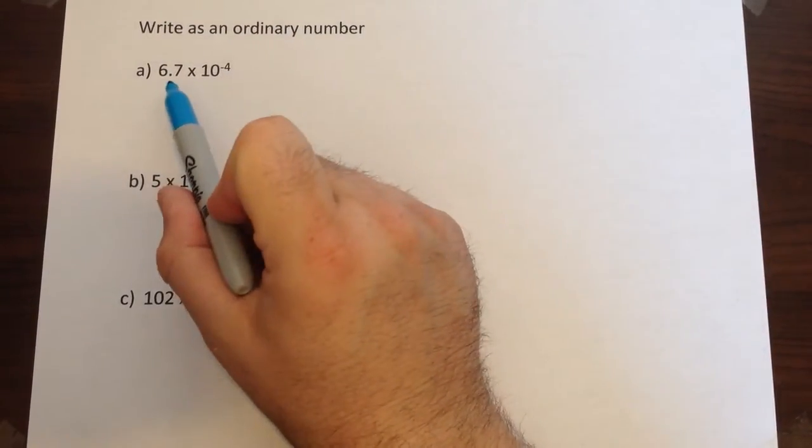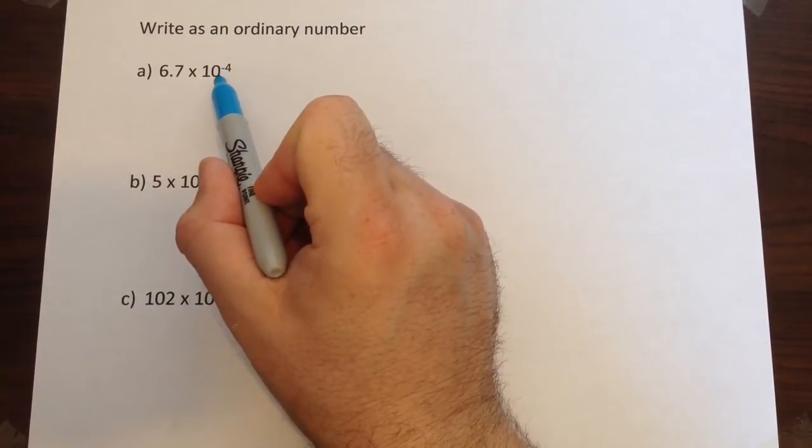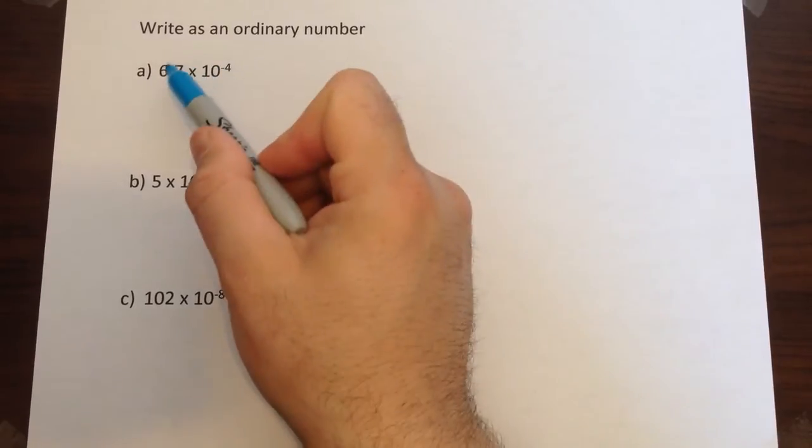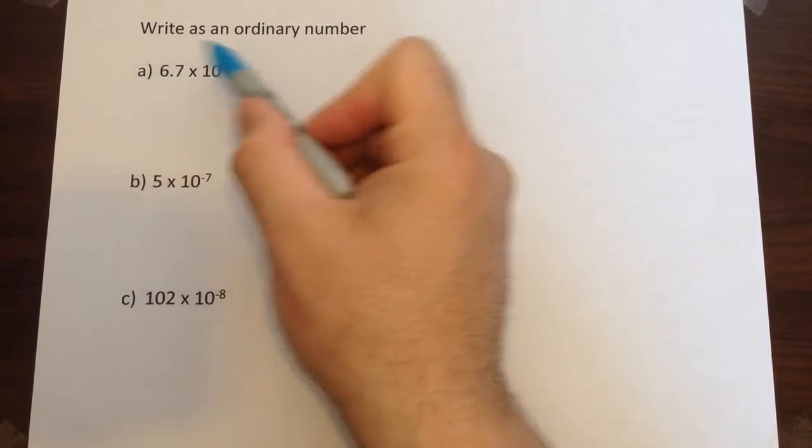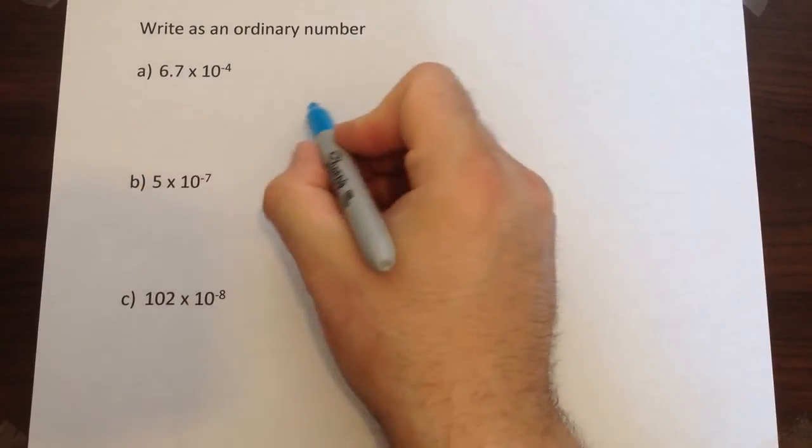This time we're going to look at converting standard form numbers back to ordinary numbers but with a negative power. The only real difference this time is that the negative power means the decimal point moves to the left instead of to the right. So let's look at how we would do that with the first one.